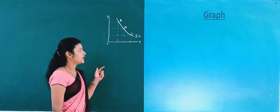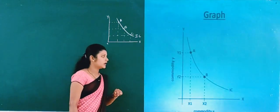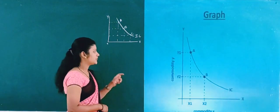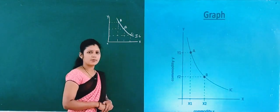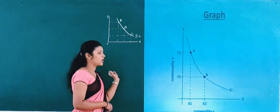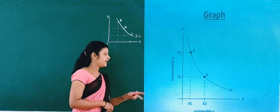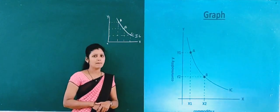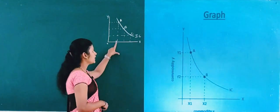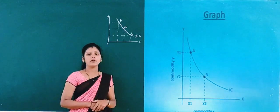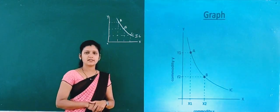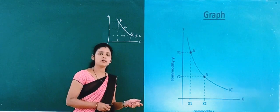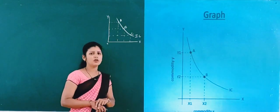Now look at the graph here. This graph shows the downward sloping of the curve from left to right. Here I have taken commodity X and Y instead of bananas and mangoes. This is the first and most important feature of indifference curve: it slopes downwards from left to right.